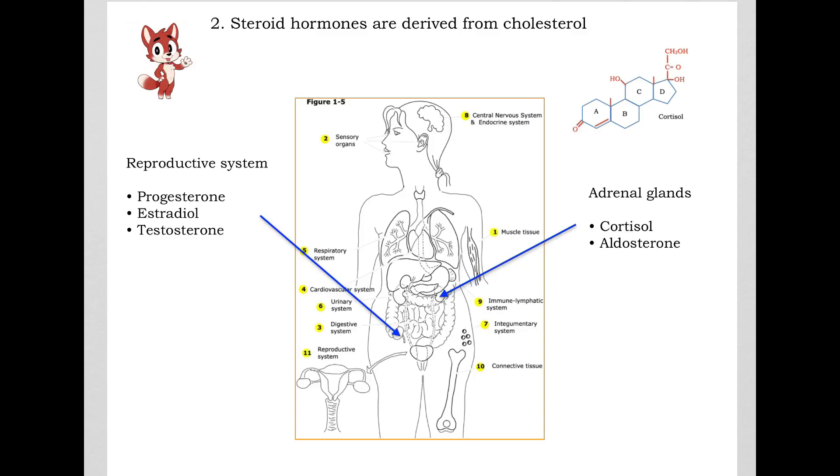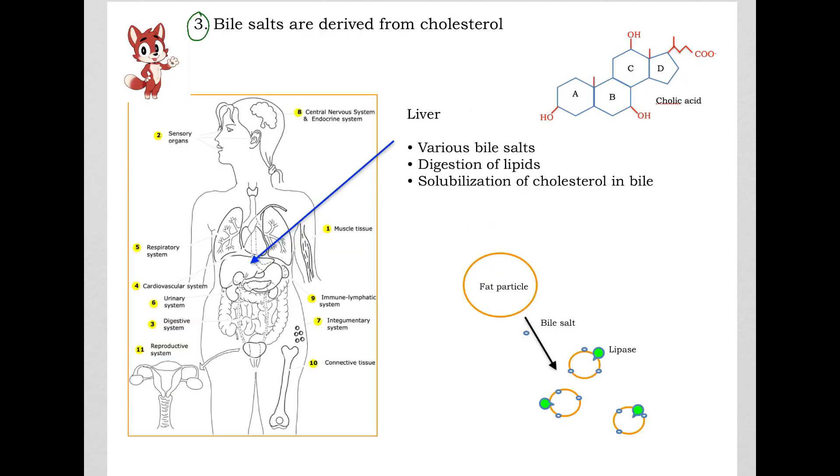The second importance of cholesterol is that the steroid hormones are made from cholesterol. So for example, the hormones in the reproductive system, progesterone, estradiol for females, testosterone for males is made from cholesterol. The adrenal glands, the adrenal cortex secretes cortisol that is made from cholesterol as well as aldosterone that is made from cholesterol. The third importance of cholesterol is that bile salts are actually made from cholesterol. So for example, colic acid is one of the many bile salts made from cholesterol.